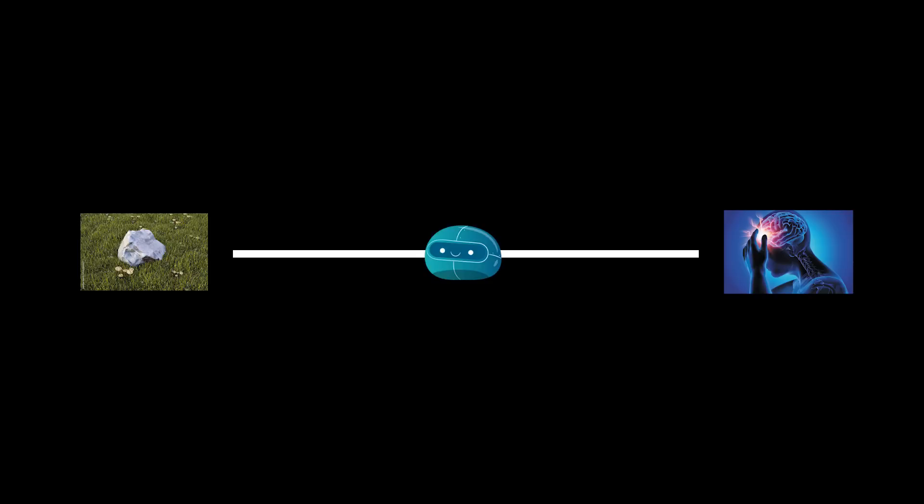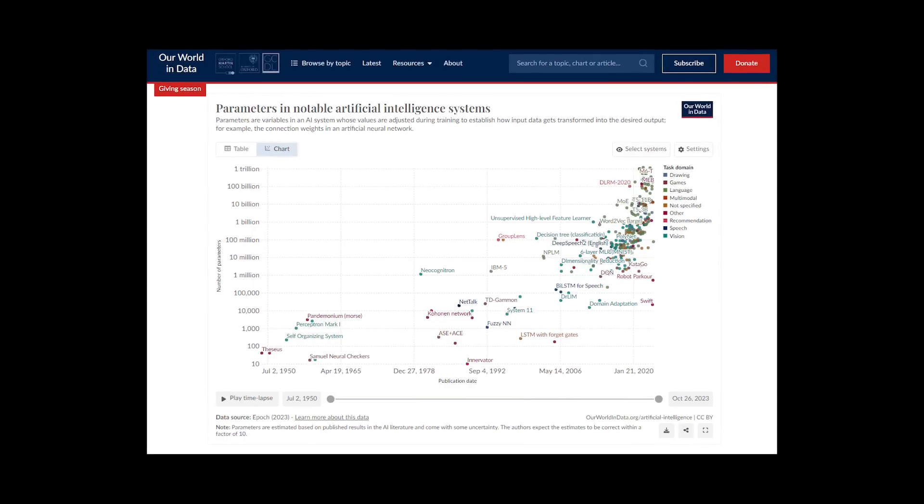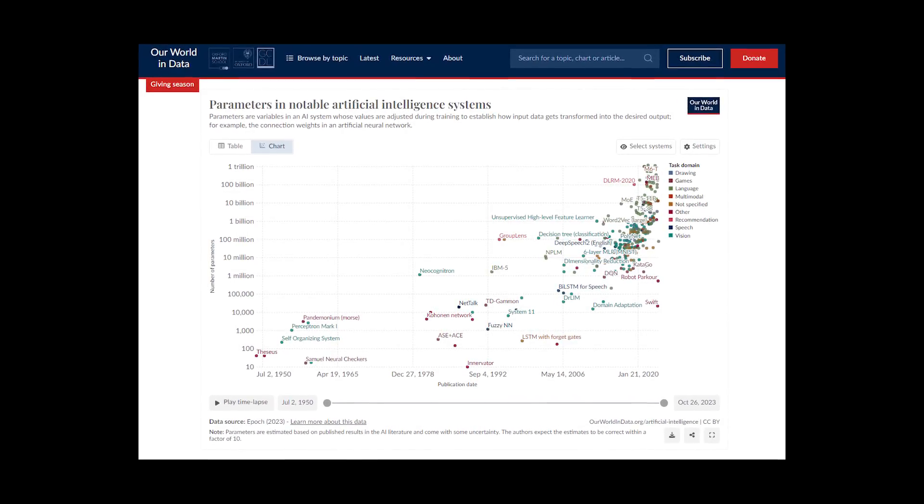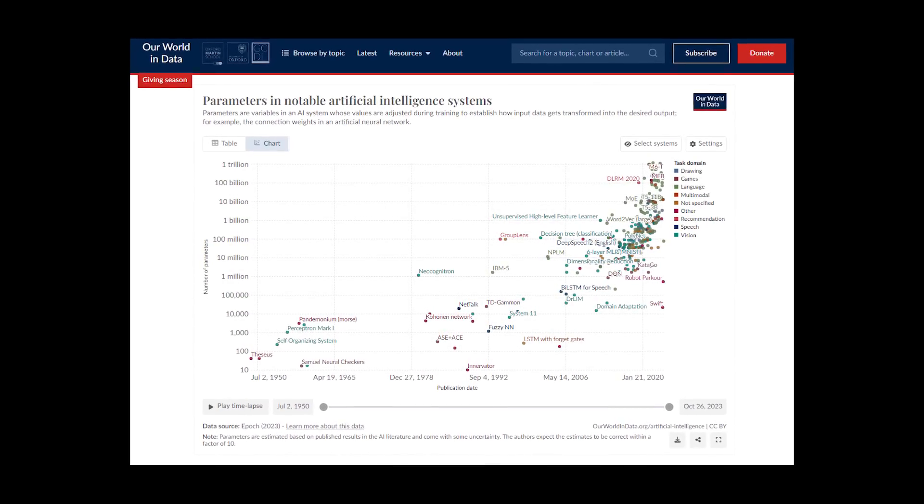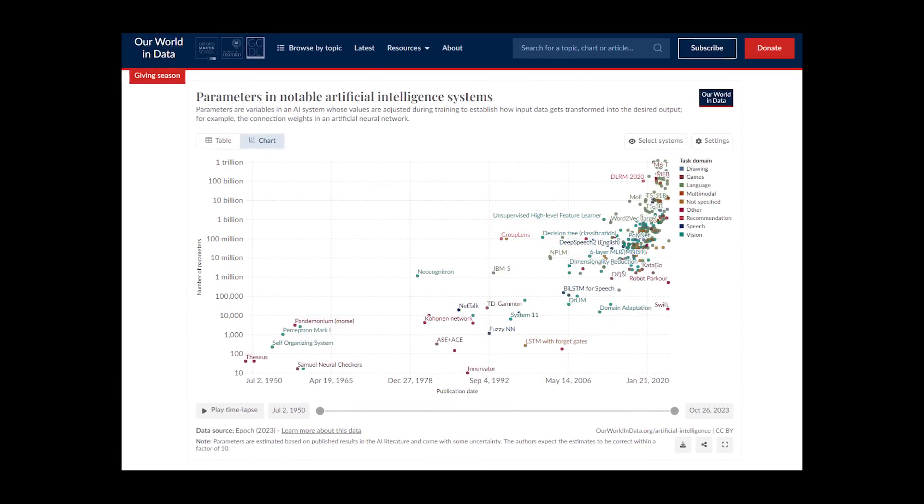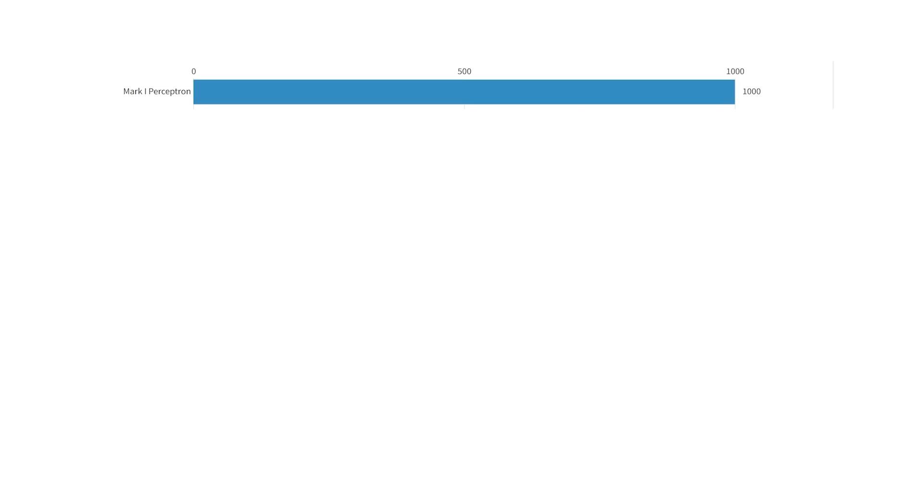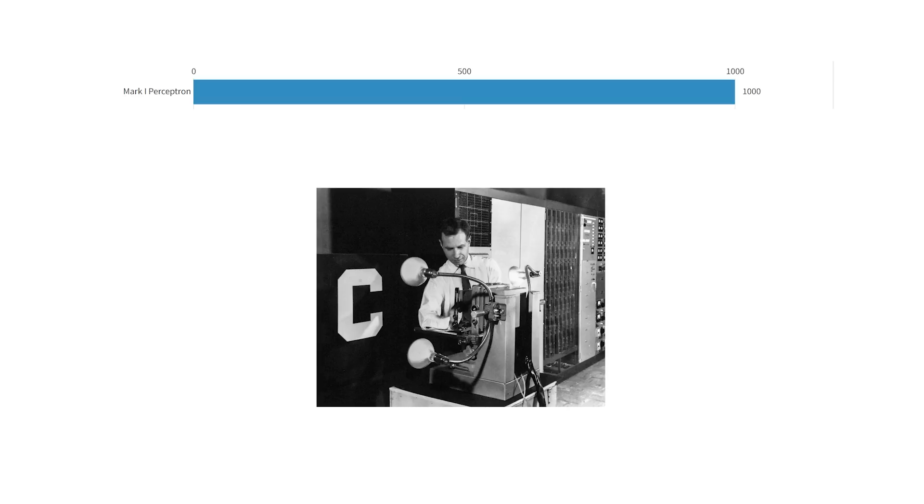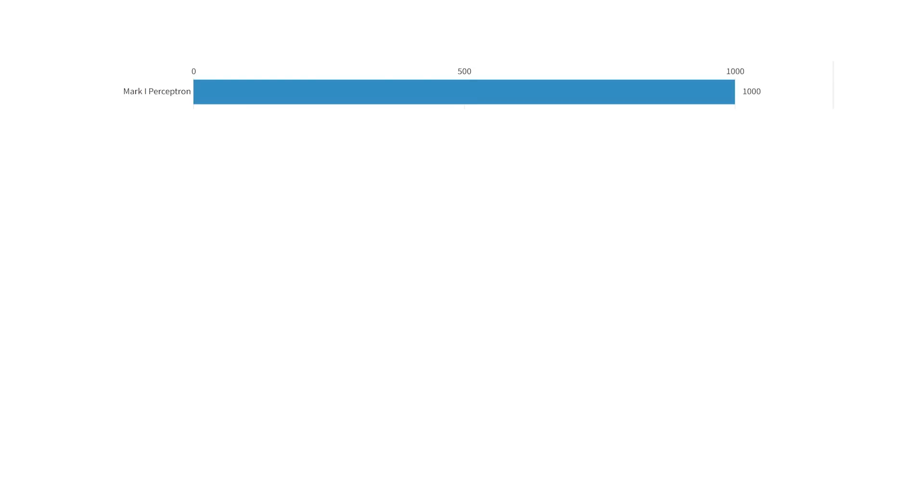So maybe AI is conscious, to some extent. Maybe it sits somewhere in the spectrum between a rock and a human. So how far along is it? I gathered some data from this Our World in Data page on the number of parameters in notable AI systems throughout history. The Mark I perceptron from 1957 was used to distinguish between two types of images, such as a circle versus a square, and had around a thousand parameters.